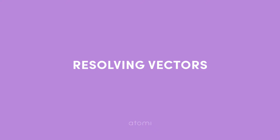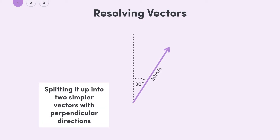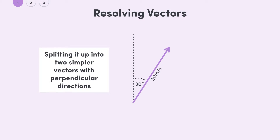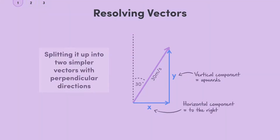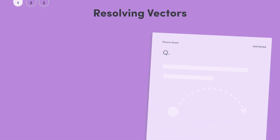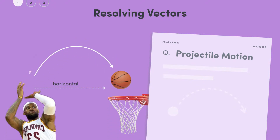We'll kick it off by going back to resolving vectors. This method allows us to take a complicated vector and split it up into two simpler vectors in defined directions. We need to apply this to 2D motion, where our directions are specifically horizontal and vertical. All the questions you'll see in the exams involve an object moving horizontally but also upwards and downwards, accelerating due to gravity.